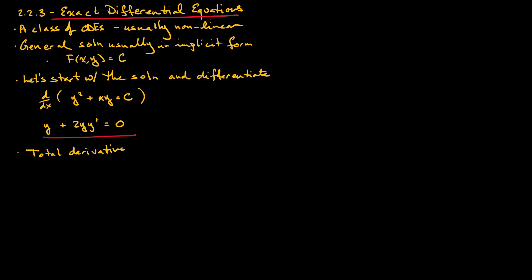In general, the total derivative of a function f is: df/dx equals the partial of f with respect to x, plus the partial of f with respect to y, multiplied by the derivative of y with respect to x. So this is the total derivative of a function f.